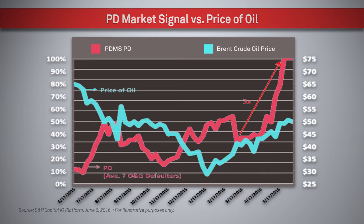However, despite a slight improvement between February and March 2016, the average PD increased three-fold in less than three months — in what I refer to as this slippery slope to default — reaching 100% by mid-May. So looking back, it appears that the financial damage caused by increased leverage and strained cash flows was simply too great for these companies, despite the modest recovery in oil prices.